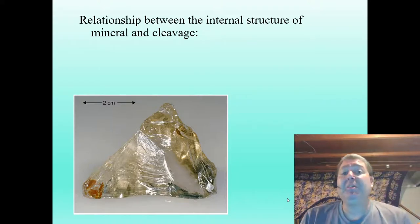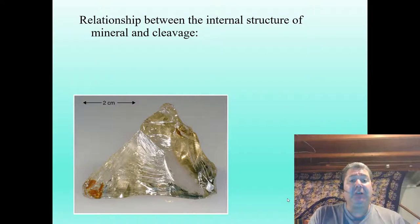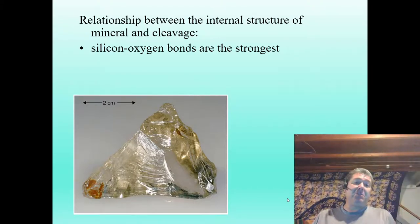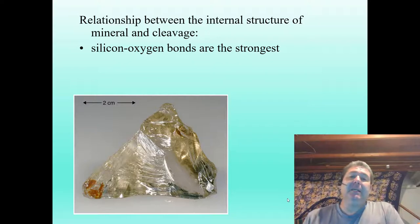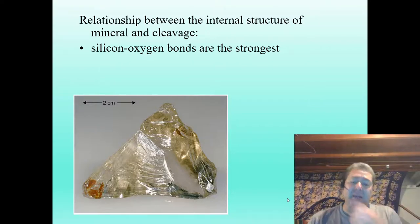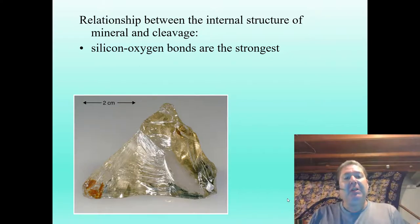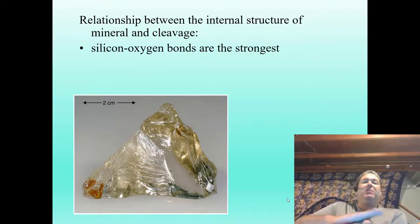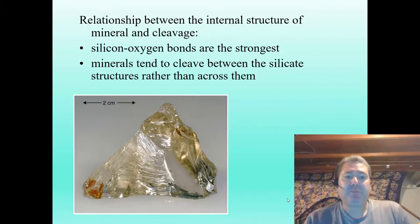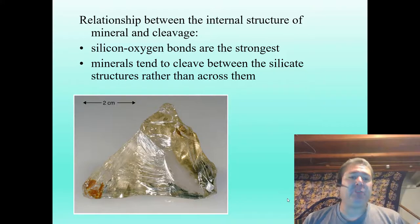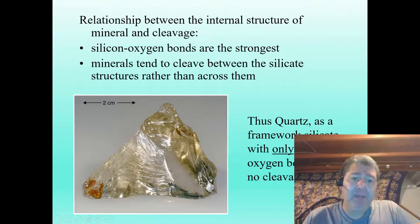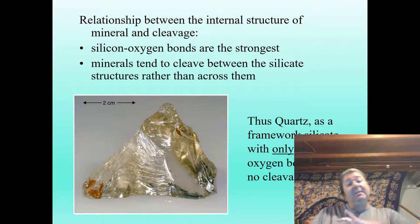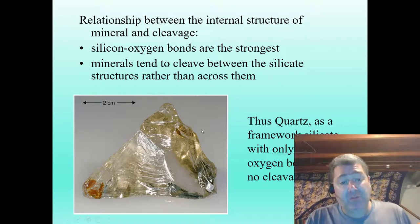Now let's look at the relationship between the internal structures of silicate minerals and cleavage. The silicon-oxygen bonds are the strongest — cleaving generally happens between these planes, between the different silicate structures. In micas (sheet silicates), they cleave between the sheets of silicate tetrahedra. Quartz, being only silicon and oxygen with all strong bonds and no weak direction, won't show cleavage — instead it shows conchoidal fracture.